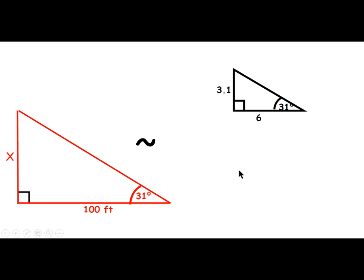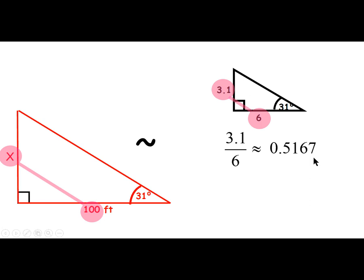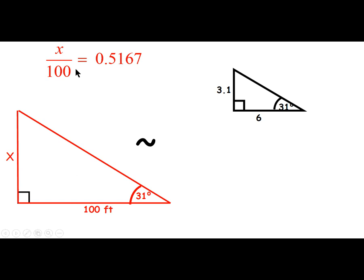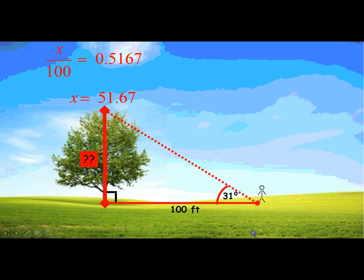Since the triangles are similar, when we divide 3.1 by 6, and when we divide X by 100, we should get the same thing. So we take out our calculator: 3.1 divided by 6 is 0.5167. Get used to some weird decimals in this class — trigonometry always has fun decimals. So X divided by 100 should also equal 0.5167. We multiply both sides by 100 to get X by itself, and we get X equals 51.67. In other words, this tree is 51.67 feet tall.